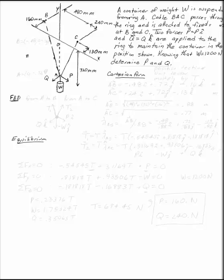A container of weight W is suspended from a ring at A. Cable BAC passes through the ring. So we've got some ring here at A.